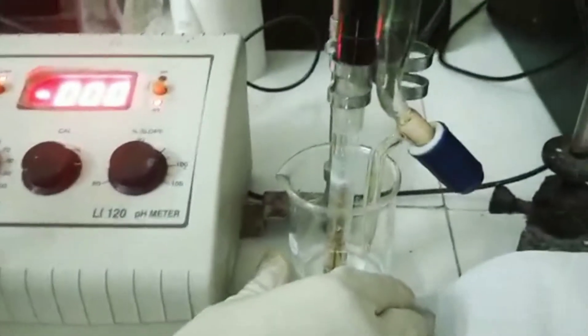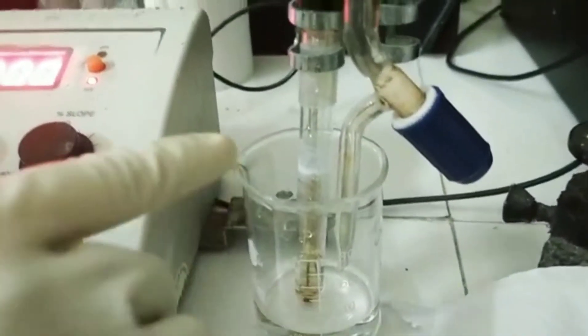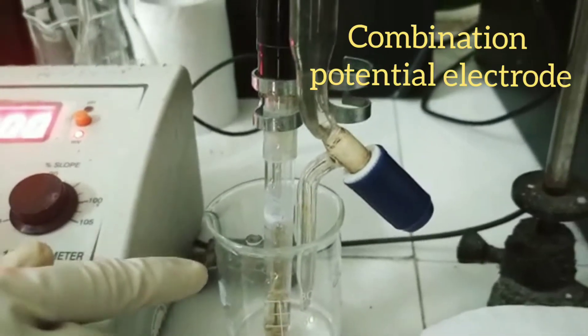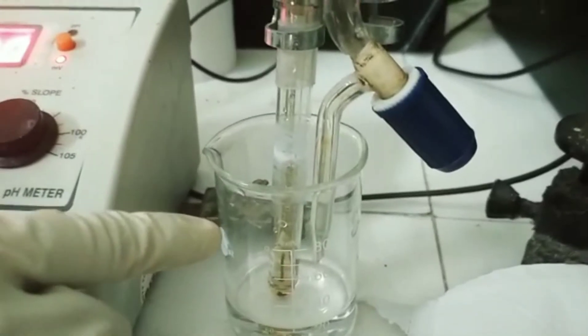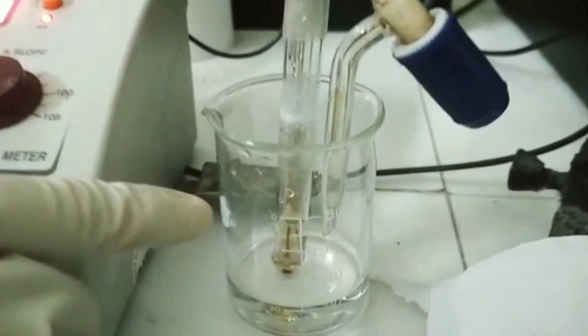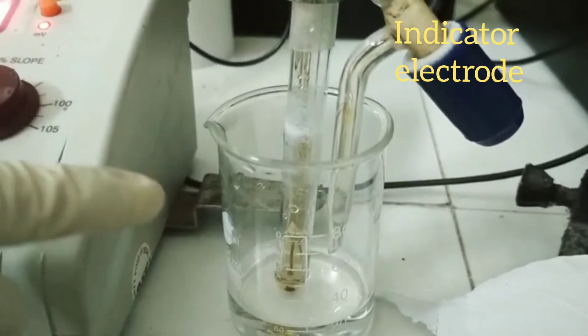And here, the potential is being measured by an electrode here. This is a combination potential electrode. Combination electrode, the name itself indicates it is having two electrodes in it. One is the indicator electrode and the other one is a reference electrode.